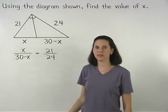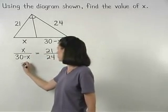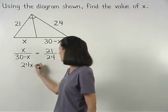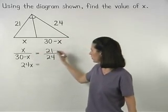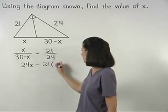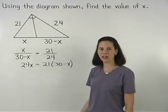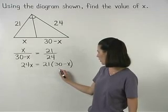Solving from here, we have 24x equals 21 times the quantity 30 minus x. Our next step is to distribute on the right side,